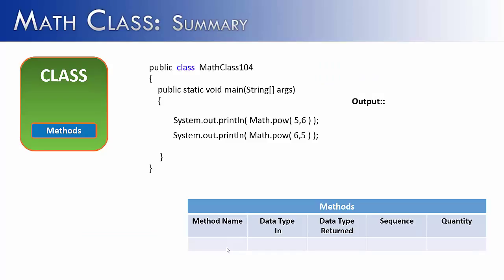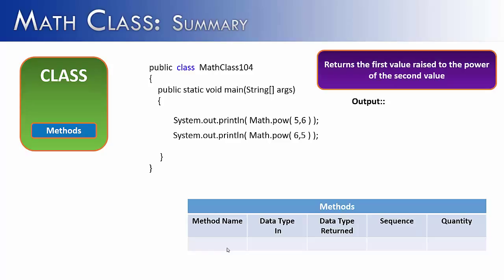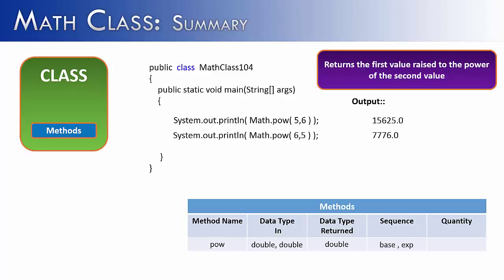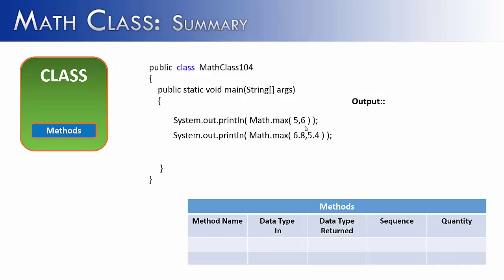The next method is POW, which stands for power. It raises the first value to the power of the second value. So it would be 5 to the power of 6, or 6 to the power of 5. The name is POW, the data type in is double, double — it converts whatever integers you pass into doubles. It also returns a double; it will never return an integer. The sequence is base then exponent, and that's important: 5, 6 gives a completely different result from 6, 5. The quantity is 2 — two arguments must be passed to Math.pow.